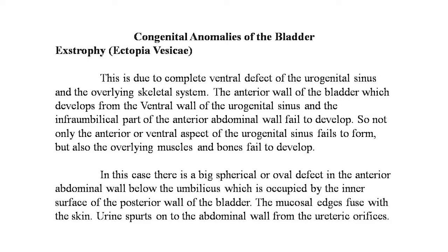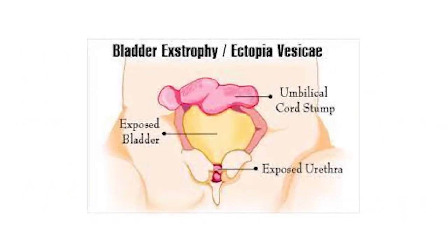The congenital anomalies of the bladder — first is ectrophy, that is ectopia vesicae. This is due to the complete ventral defect of the urogenital sinus and the overlying skeletal system. The anterior wall of the bladder, which develops from the ventral wall of the urogenital sinus, and the infraumbilical part of the anterior abdominal wall fail to develop. There is a big spherical or oval defect in the anterior abdominal wall below the umbilicus, occupied by the inner surface of the posterior wall of the bladder. The mucosal edges fuse with the skin; urine spurts onto the abdominal wall from the ureteric orifices.